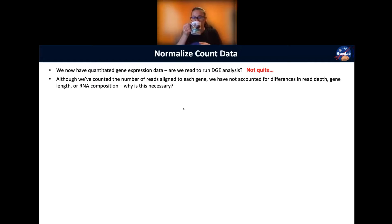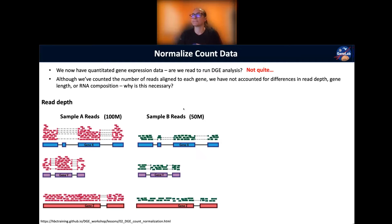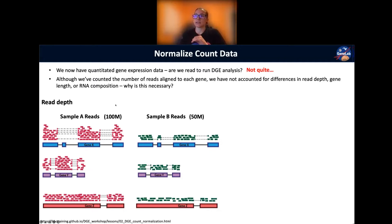Why is it necessary for us to normalize the data? Essentially, to compare apples with apples — to make sure we start all the samples on the same playing field. So I'm going to go over these different types of normalization. First is read depth: we have to account for sequencing depth in order to perform gene expression comparison between samples.